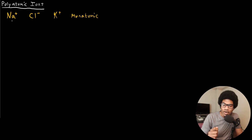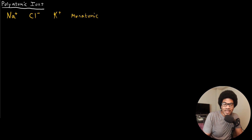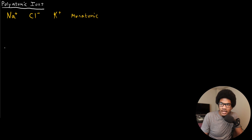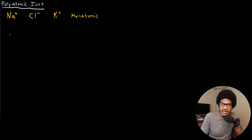When we talk about polyatomic ions, this means a group of atoms that contains some sort of charge. These are molecules in themselves — they are actually molecules and they carry a charge. Let's look at a few examples of what I mean by polyatomic ions.